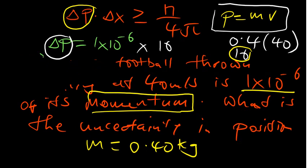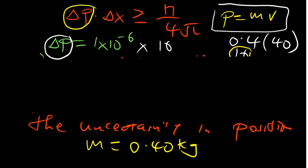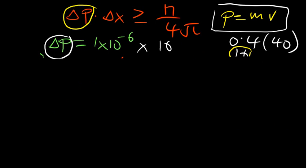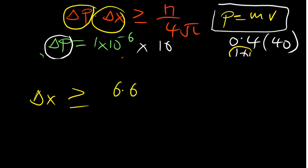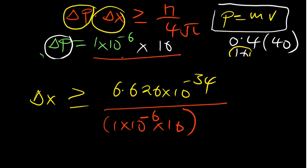We've now determined our uncertainty in momentum. We now want to find the uncertainty in position. We go back to our formula and make uncertainty in position the subject: Δx ≥ h / (ΔP × 4π) = 6.626 × 10⁻³⁴ / (1 × 10⁻⁶ × 16 × 4π).